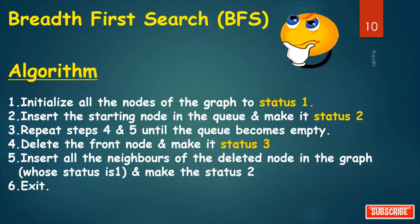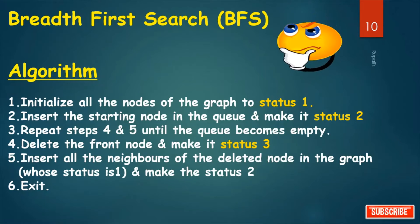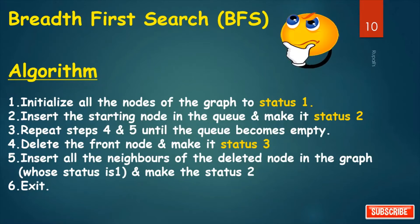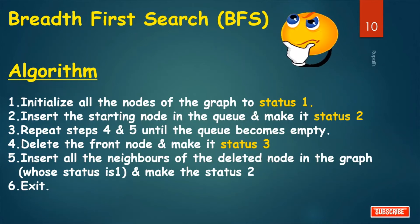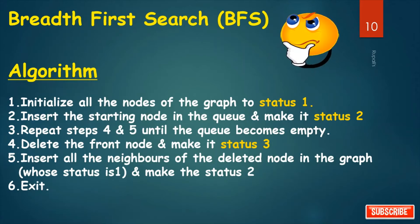What is the algorithm for BFS traversal? First, initialize all nodes to status 1. Insert the starting node in the queue and make it status 2. Repeat steps 4 and 5 until the queue becomes empty. Step 4: delete the front node and make it status 3. Step 5: insert all neighbors of the deleted node whose status is 1 and make their status 2. Finally, exit.